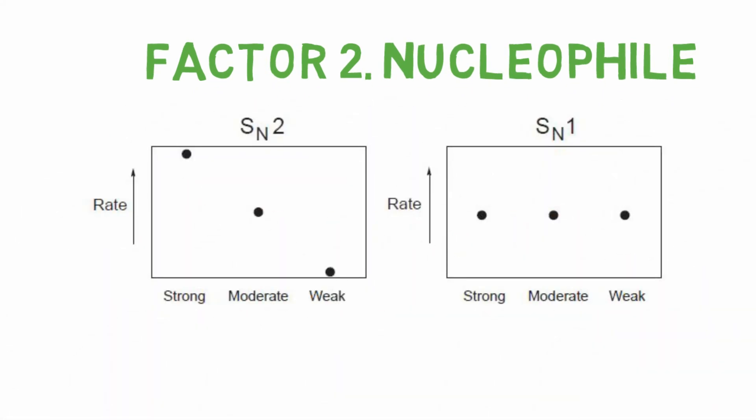As in SN2, both nucleophile and electrophile concentration is important. Moreover, nucleophile attack and leaving group exit happen at the same time. The strength of the nucleophile plays a significant role. Strong nucleophile favors SN2. And weak nucleophile disfavors SN2, which indirectly means weak nucleophile favors SN1. As SN1 has no dependence on the nucleophile, as we said earlier.